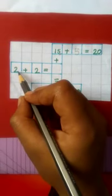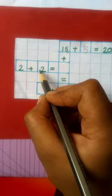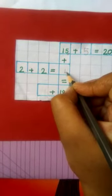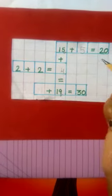Okay, now the next one. 2 plus 2 is equal to 4.